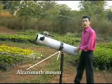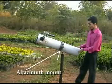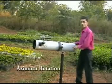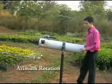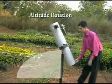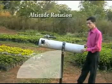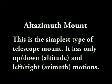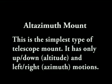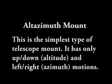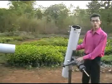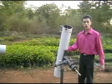There are two types of mounts used by amateurs. The mount fitted on the telescope is called the alt-azimuth mount. This rotation is called azimuthal rotation, while this rotation is called altitudinal rotation.